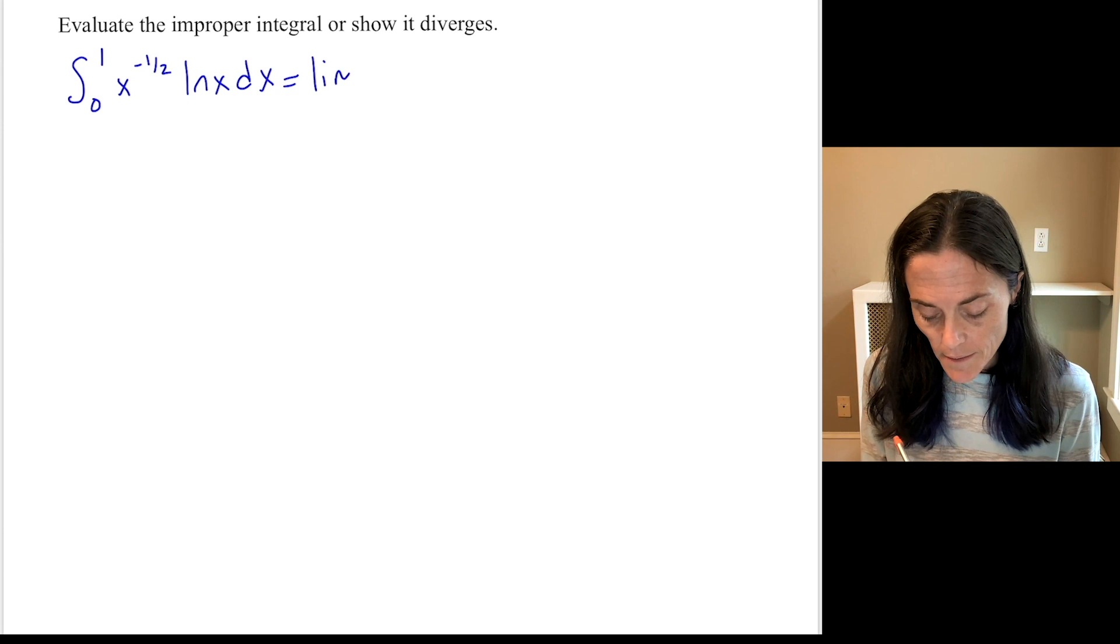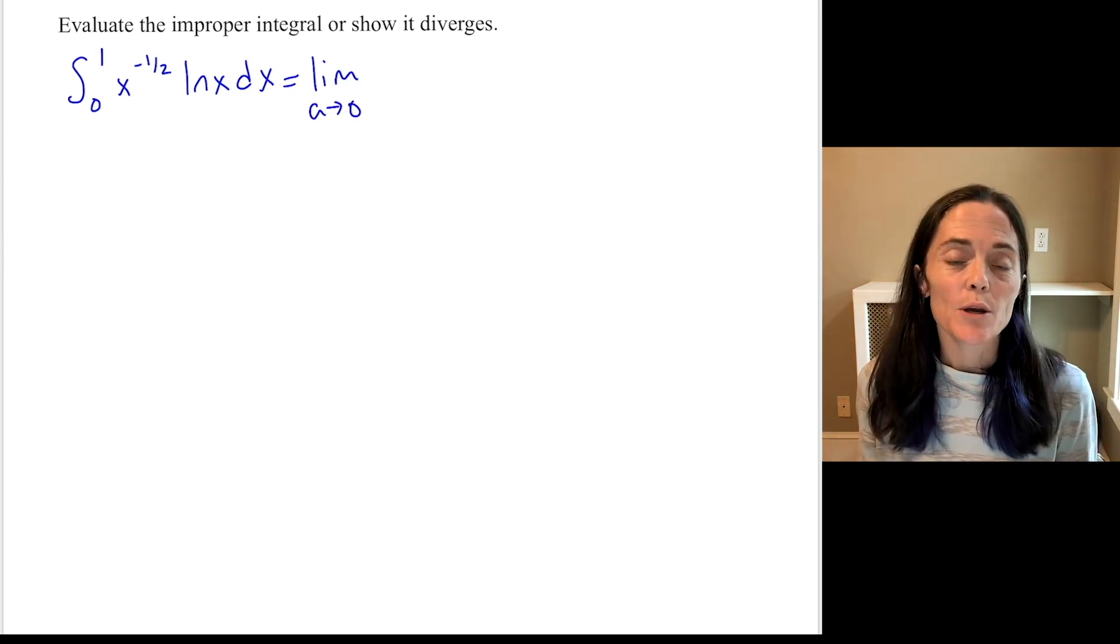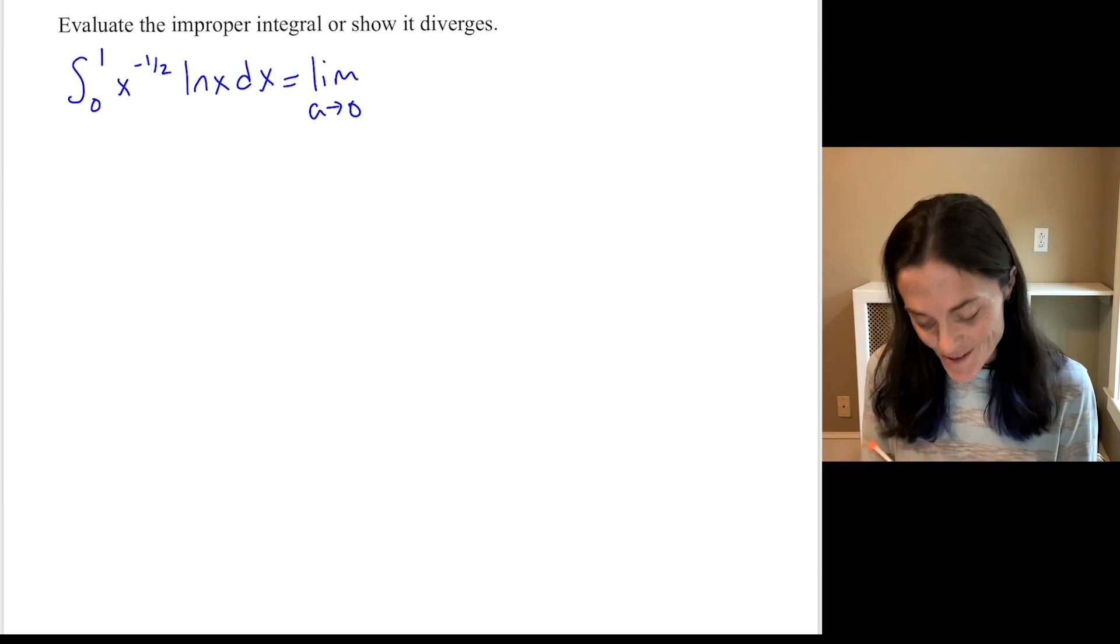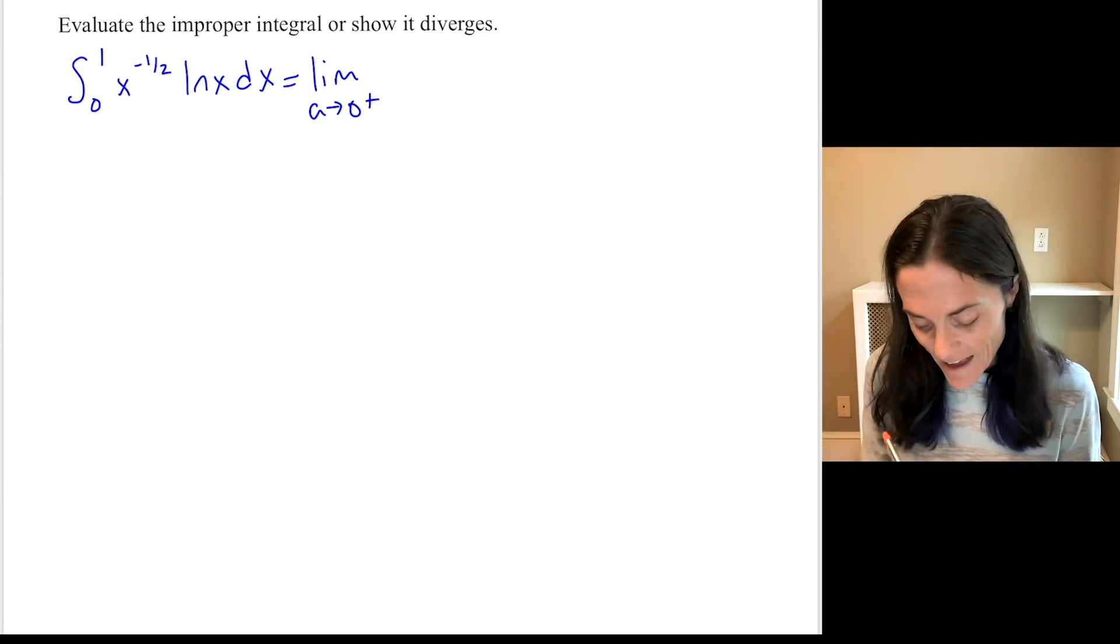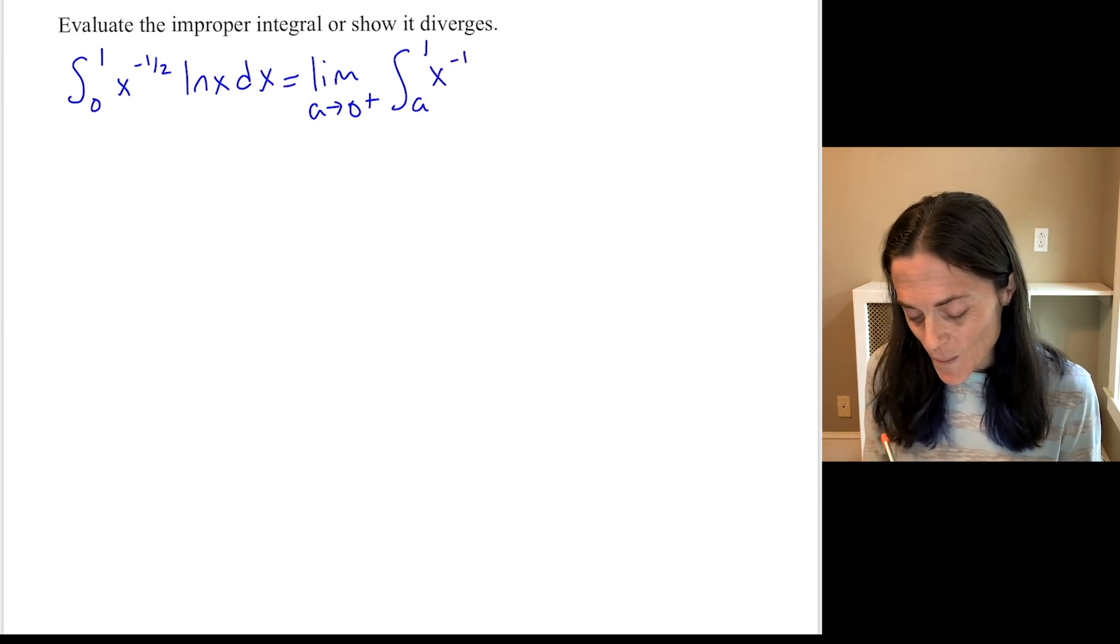So we begin with the definition. This would be a limit as a approaches 0. Well, technically, you're approaching 0 from bigger values. That would be a limit from the right of the integral from a to 1 of x to the minus 1 half ln x dx.